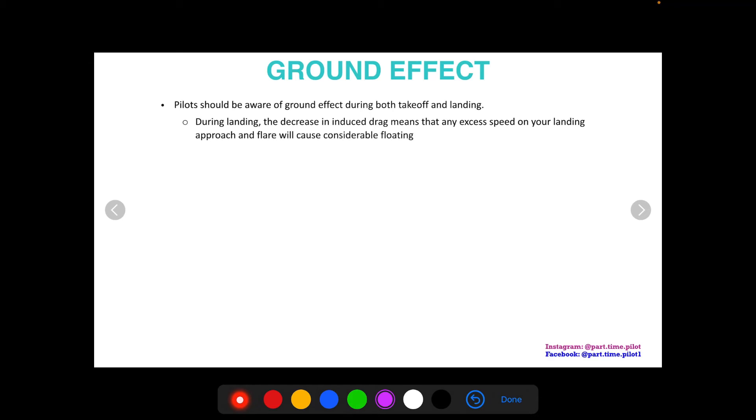During landing, the decrease in induced drag means that any excess speed on your landing approach and flare will cause considerable floating. So if your aircraft is coming in and you flare, if you have too much airspeed, because you're close to the ground, the aircraft's not going to want to come down and you're going to keep floating. And if your runway is not long enough, you may have to do a go-around because you're just too fast and you're not slowing down enough and ground effect is keeping you in the air.